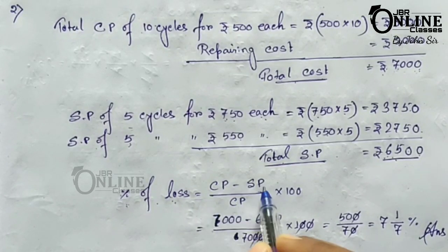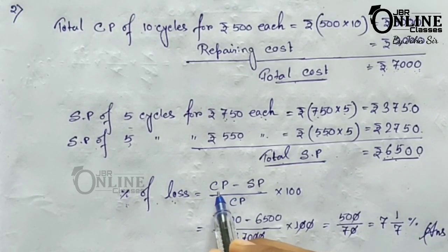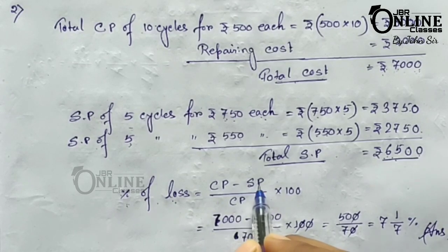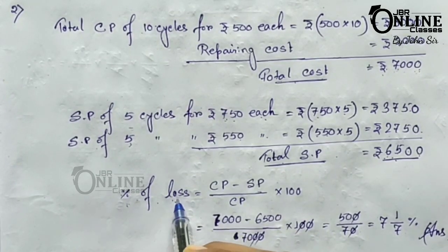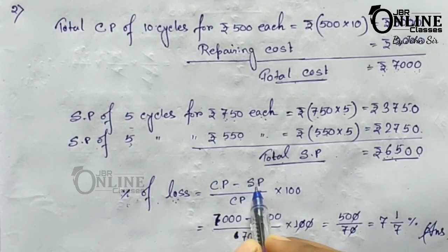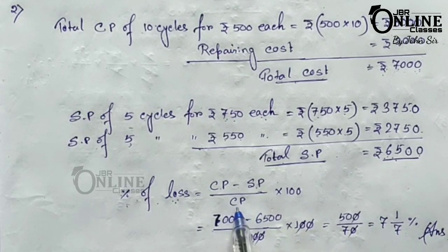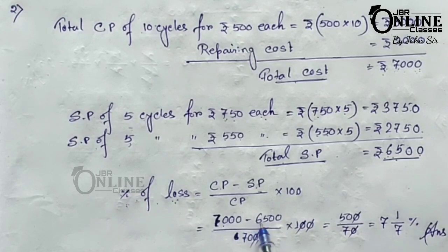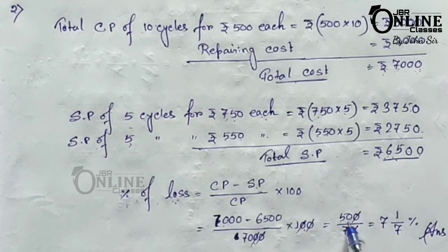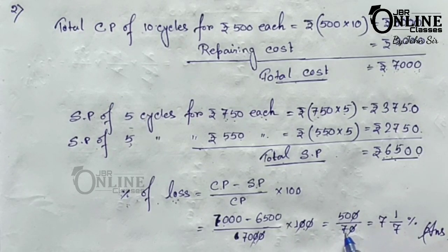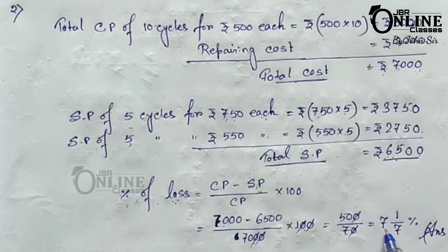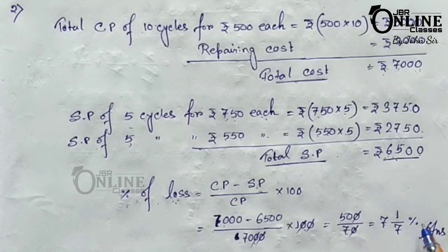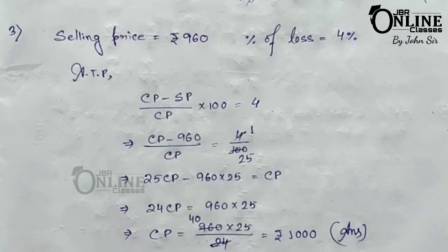For percentage of loss, the formula changes slightly: CP minus SP divided by CP, into 100. So (7000 minus 6500) divided by 7000, into 100 equals 50/7, which means 7 and 1/7 percent is the loss percentage for problem number two.